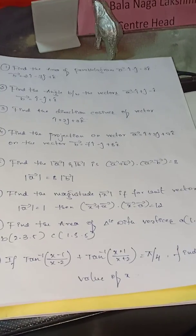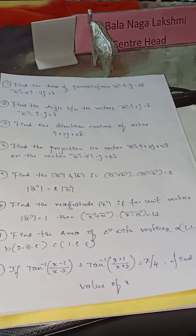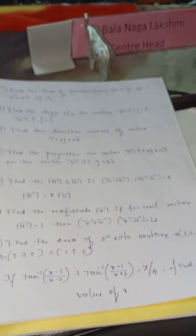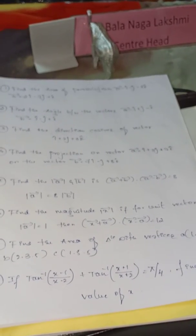And find the magnitude of x vector, if for unit vector magnitude of a equal to 1, then x bar plus a bar dot x bar minus a bar is equal to 12.